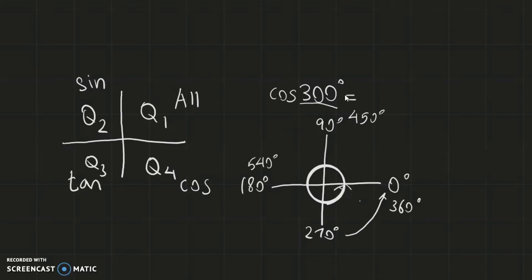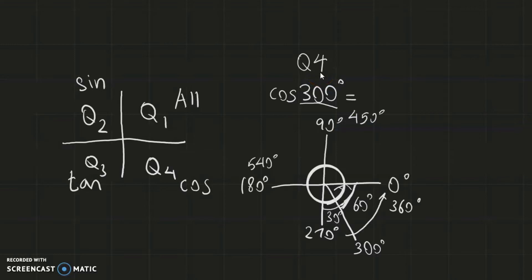Positioning 300 degrees in quadrant 4, the angle formed with the x-axis is 60 degrees — because 360 minus 300 equals 60 — and the remaining angle up to the 270-degree boundary is 30 degrees. Both are special angles. Since 300 degrees is in quadrant 4 and only cosine is positive in quadrant 4, and this is a cosine function, the answer will be positive.